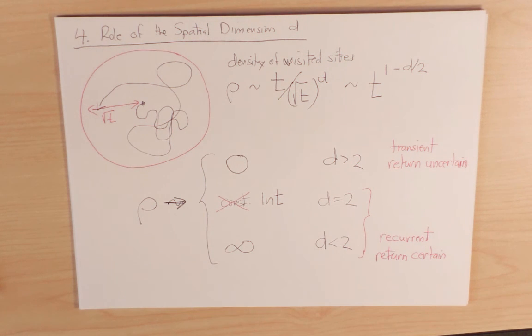For d greater than 2, a random walk is transient and its return is uncertain.